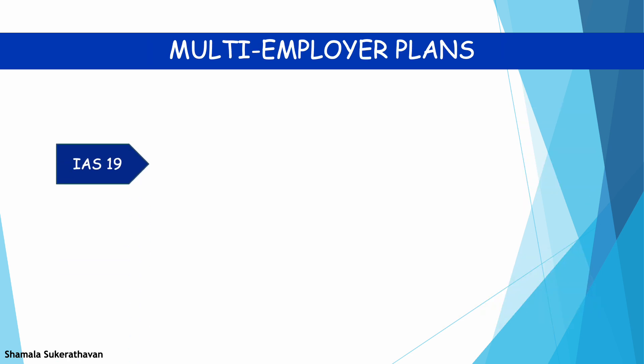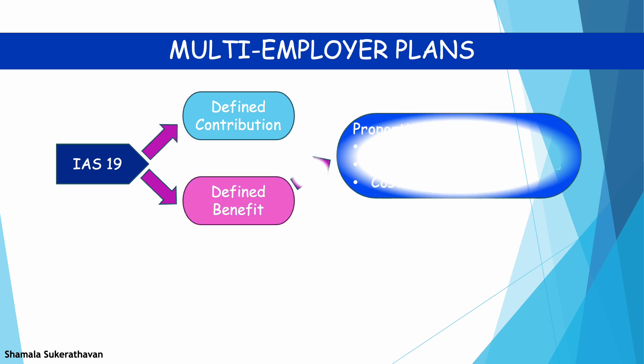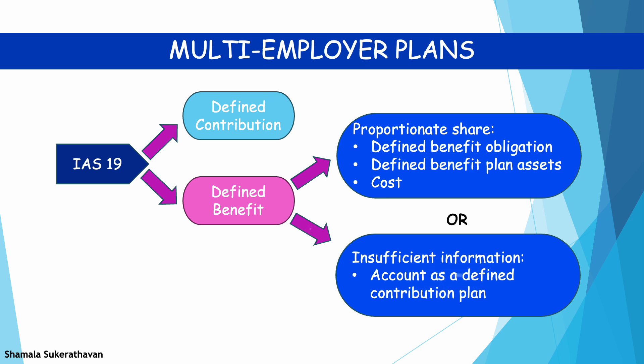According to IAS 19, if an entity participates in a multi-employer plan, an entity shall classify the multi-employer plan as either a defined contribution plan or a defined benefit plan. In the case of a defined benefit multi-employer plan, the entity shall account for its proportionate share of the defined benefit obligation, plan assets, and costs associated with the plan in the same way as any other defined benefit plan, as discussed in Part 3 of the Lecture Series. However, if sufficient information is not available to adopt defined benefit accounting, the entity shall account for the plan as a defined contribution plan.